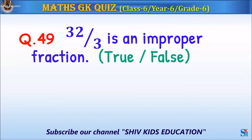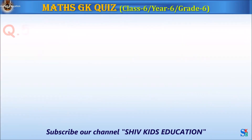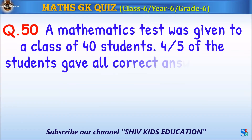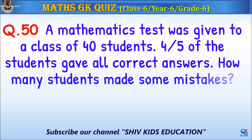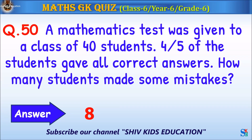Question 49: 32 over 3 is an improper fraction — true or false? The answer is true. Question 50: A mathematics test was given to a class of 40 students. Four-fifths of the students gave all correct answers. How many students made some mistakes? The answer is 8.